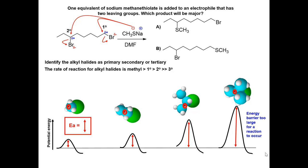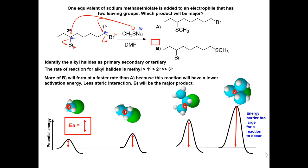Knowing this, we can say that more of B will form at a faster rate than A, because this reaction will have less steric interaction in the transition state and will have a lower activation energy. B will be the major product.